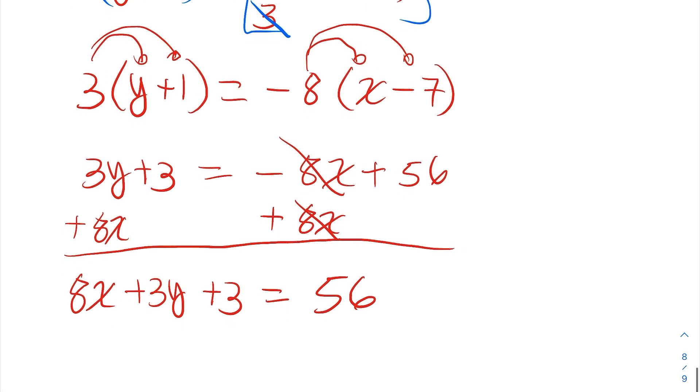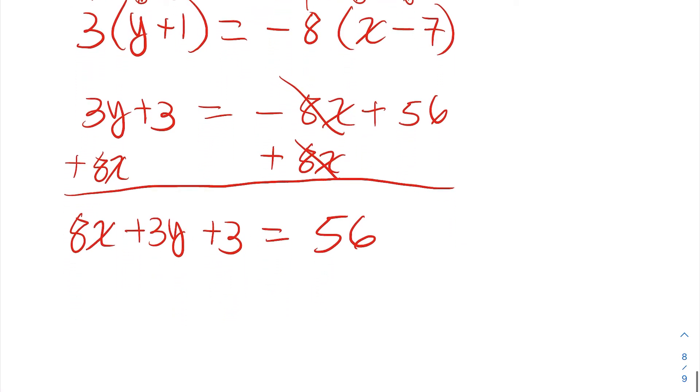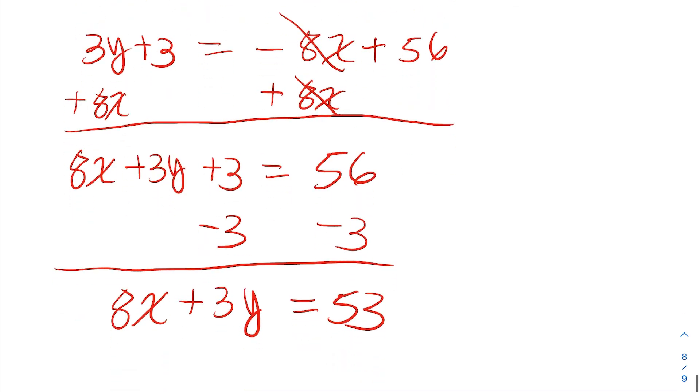And the last step now is to get that 3 onto the right side by subtracting it from both sides. So I'll have 8x plus 3y equals 53. And this is the form ax plus by equals c. So this is the answer.